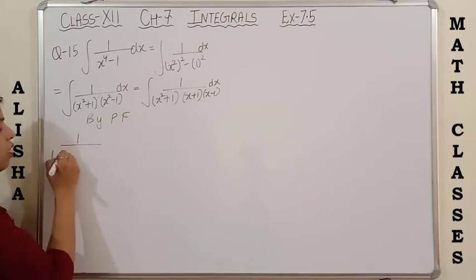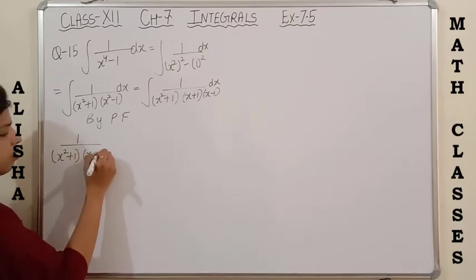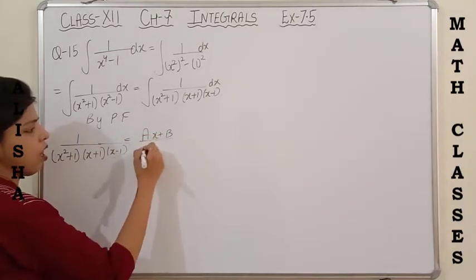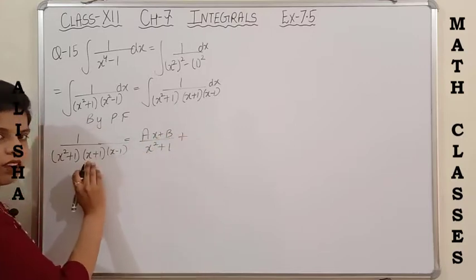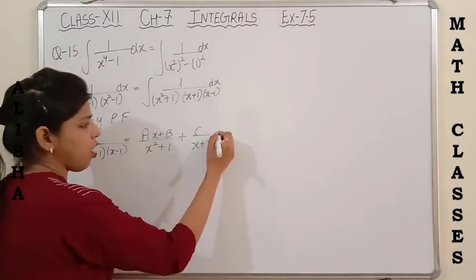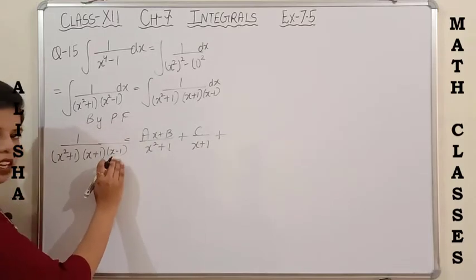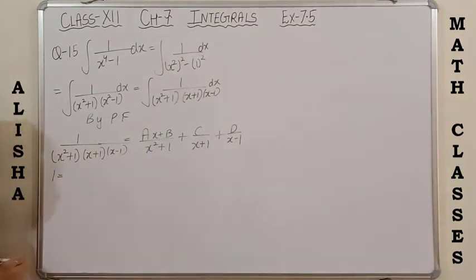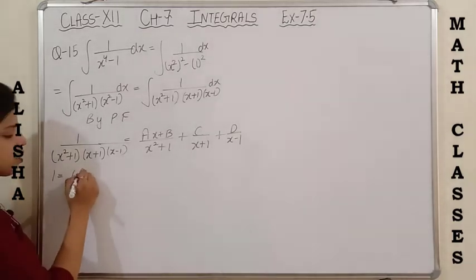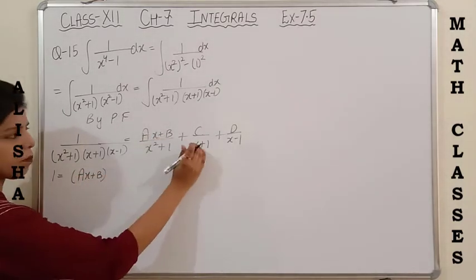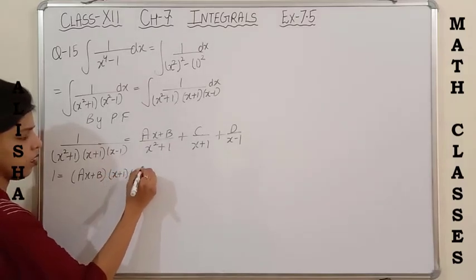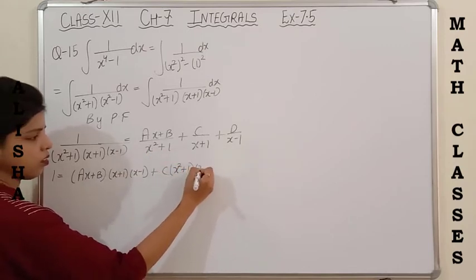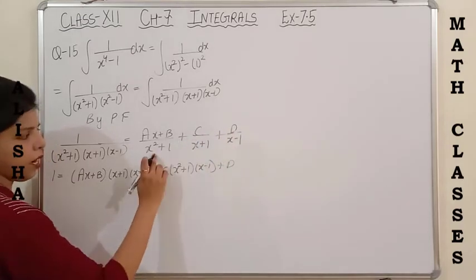By partial fraction, we write: the quadratic factor gives (Ax plus B) upon (x squared plus 1). The linear factor (x plus 1) gives a constant C, and the linear factor (x minus 1) gives another constant D. Taking LCM by shortcut: (Ax plus B) is multiplied by (x plus 1)(x minus 1), C is multiplied by (x squared plus 1)(x minus 1), and D is multiplied by (x squared plus 1)(x plus 1).